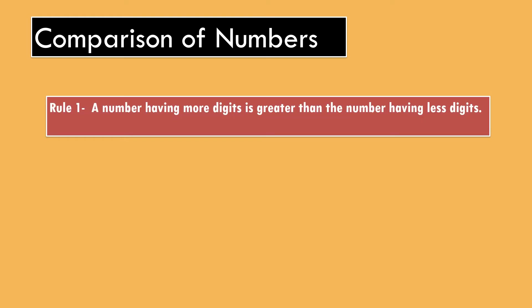Now, comparison of numbers. There are two rules to compare numbers. In previous class, we have learnt that. Rule 1: A number having more digits is greater than the number having less digits. For example, 16 has 2 digits and 9 is single digit, so 16 is greater than 9.